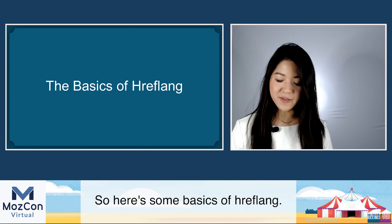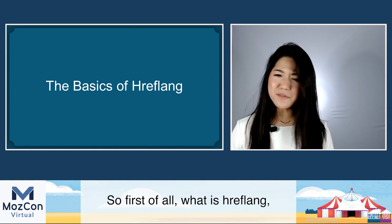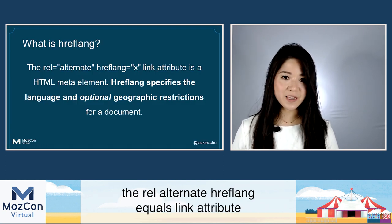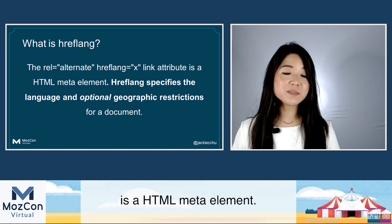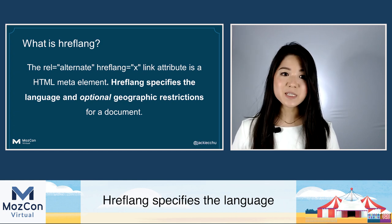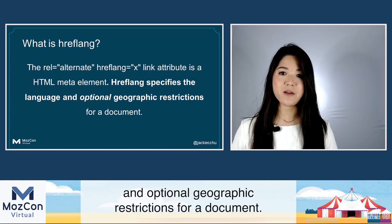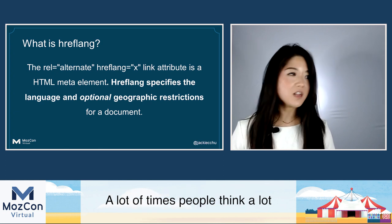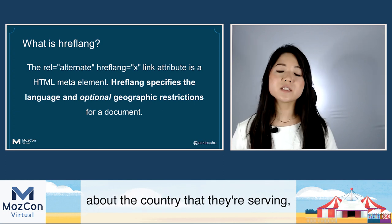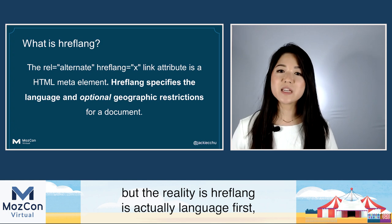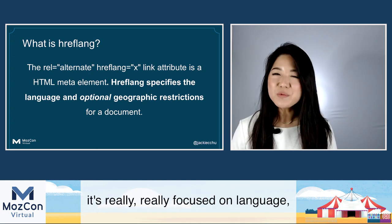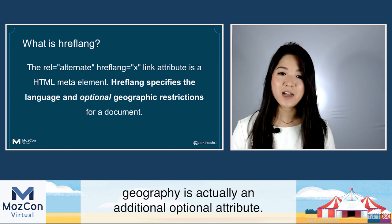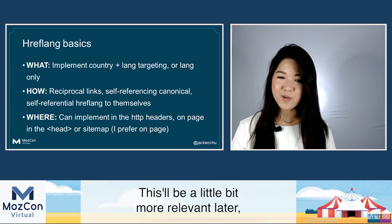So here are some basics of hreflang. The rel alternate hreflang equals blank link attribute is an HTML meta element. Hreflang specifies the language and optional geographic restrictions for a document. That's really important — optional geographic. A lot of times people think a lot about the country they're serving, but hreflang is actually language first. It's really, really focused on language. Geography is actually an additional optional attribute.